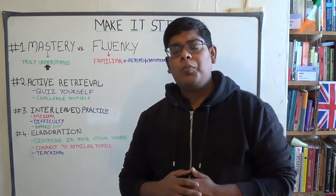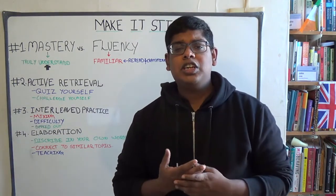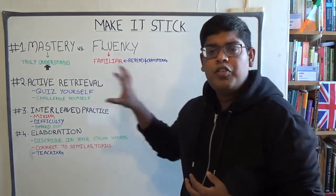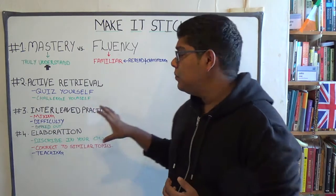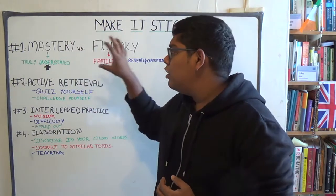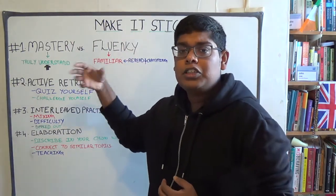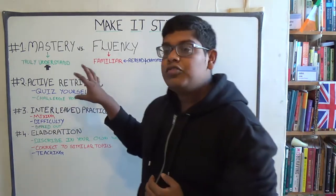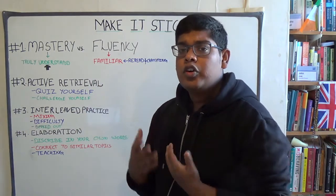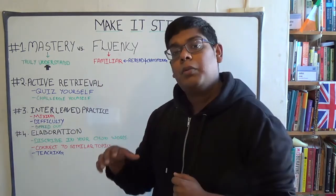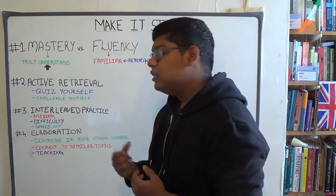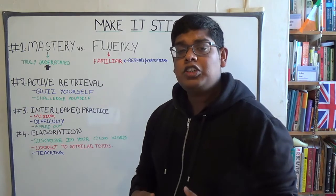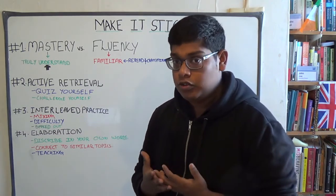The book revolves around topics on how to improve your studies and how to develop good memory. Let's see a few points that the book discusses. First, mastery and fluency — how to be a master on what you have studied instead of just being fluent in it. Second is active retrieval, where you challenge yourself to bring back what you have studied. Third is interleaved practice, where you mix up different types of practice. And fourth, elaboration, where you elaborate what you have studied so far.